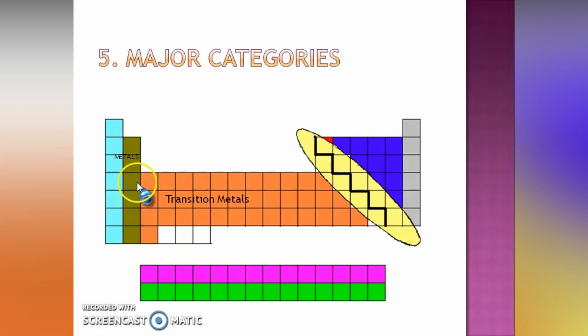Then, everything below here which is the orange color is the transition metal. Then, these here, the blue color here represents the region for the non-metals. All elements found here are called non-metals.